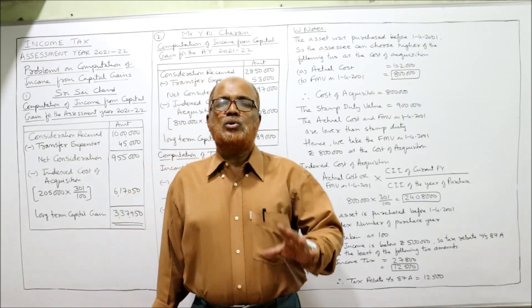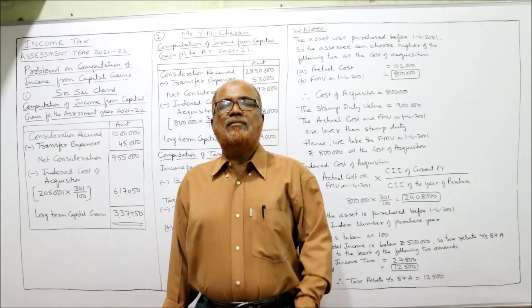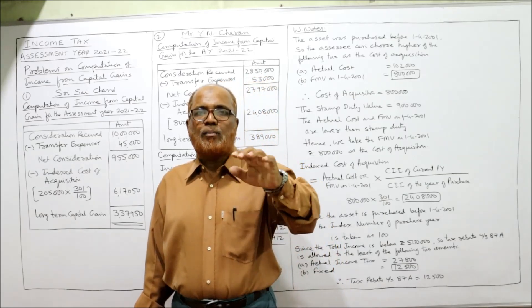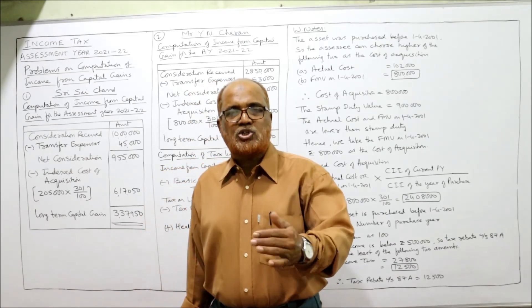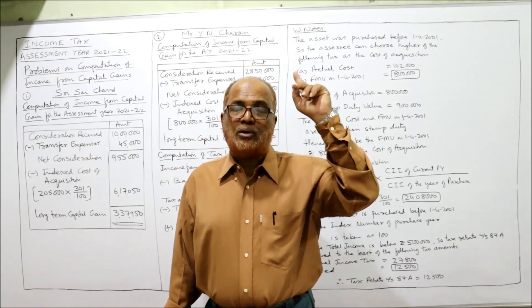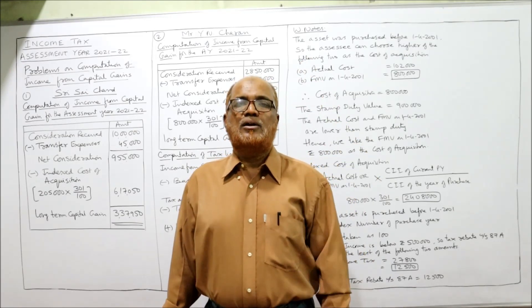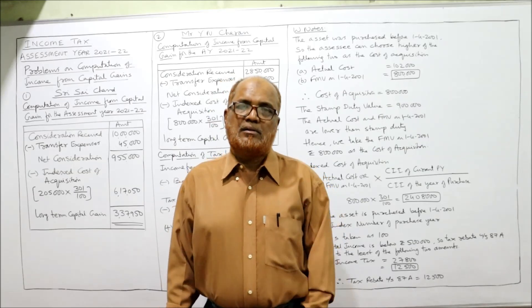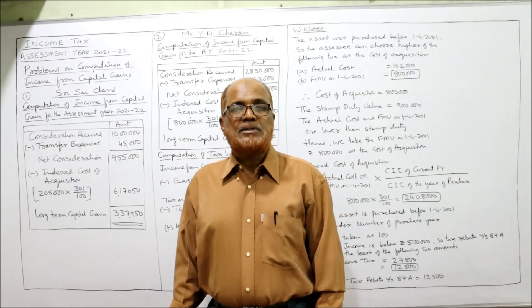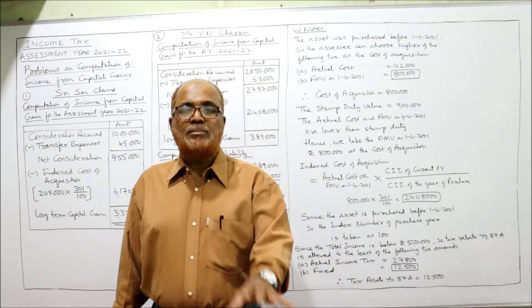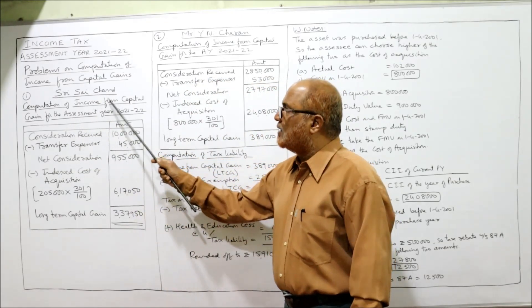First, you have to see whether the asset is a long-term or short-term capital asset. If the assessee holds the asset for more than three years, it is long-term capital gain. In our problem, Sri Sai Chand purchased gold ornaments in 2001-2002 and sold during the current previous year 2021 — so it is a long-term capital asset and we compute long-term capital gain.